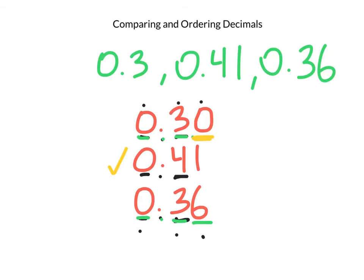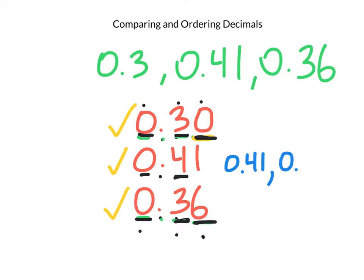Now I can compare. Since the top number and bottom number each have a 0 in the ones and a 3 in the tenths, I look to the hundredths. The top number has a 0, the bottom number has a 6. So 0.36 is bigger, and the smallest is 0.30. So when I order them from greatest to least: 0.41 is greatest, then 0.36, and then 0.30.